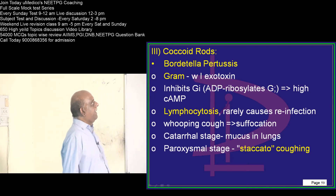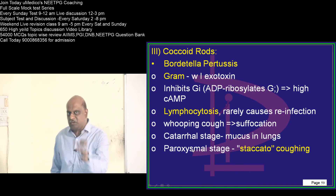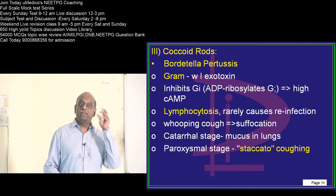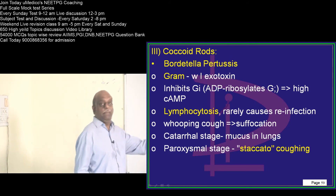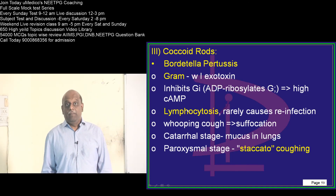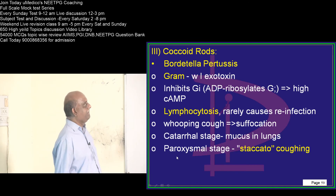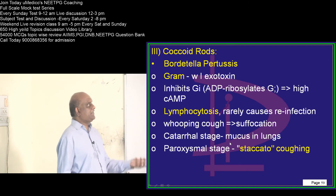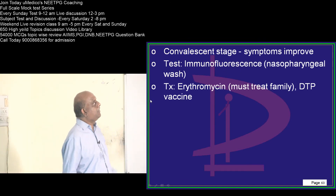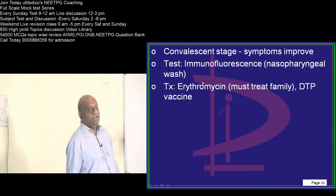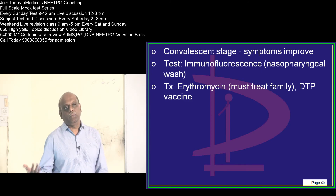A few comments on Bordetella pertussis. It is gram-negative — a gram-negative organism which can still produce an exotoxin, and that is the speciality of Bordetella. It inhibits the inhibitory type of G-protein by ADP ribosylating it, leading to high cyclic AMP. Pertussis is marked by high lymphocytosis and will not cause reinfection. There is a catarrhal stage, paroxysmal stage — where a staccato type of coughing is classical — and finally a convalescent stage. Use nasopharyngeal swab with immunofluorescence to detect it. Erythromycin is used to treat not just the patient but the entire family. You all know the DPT vaccine.